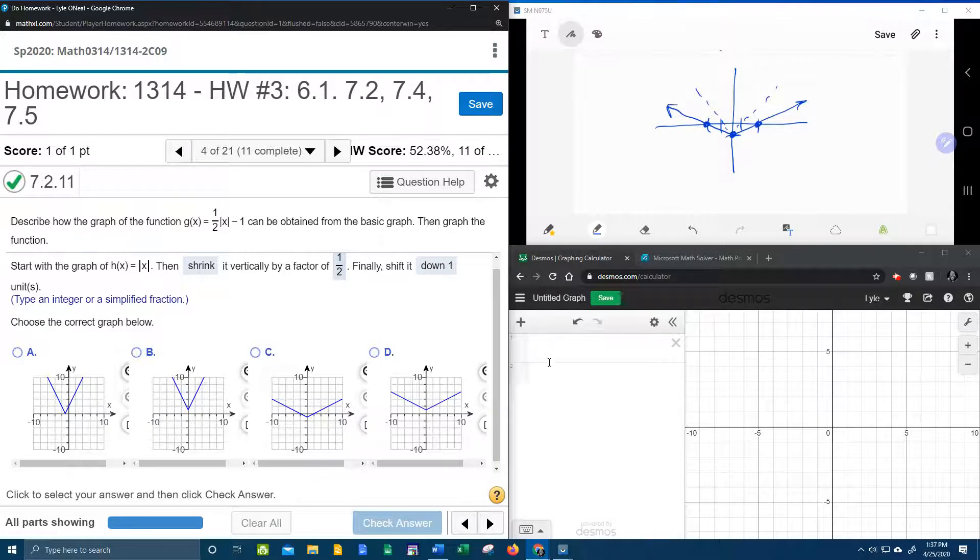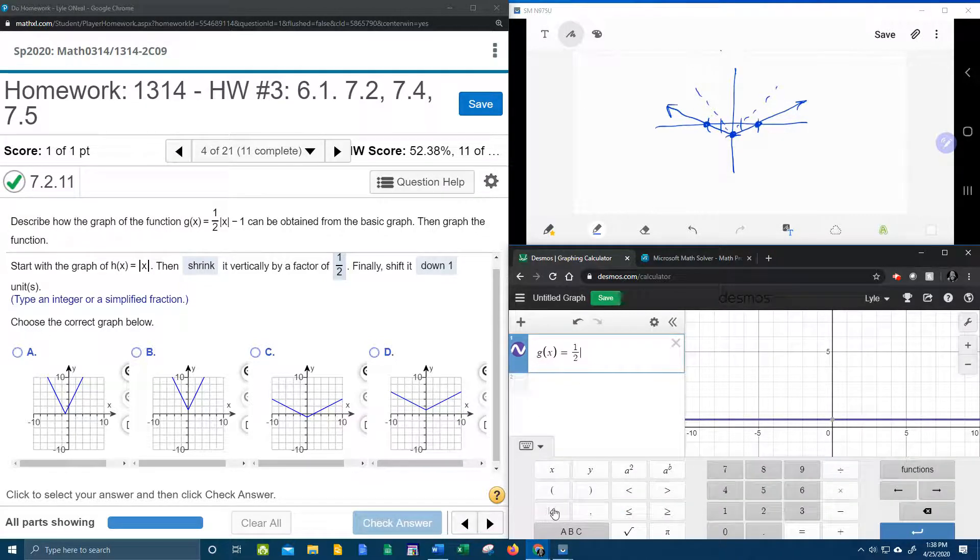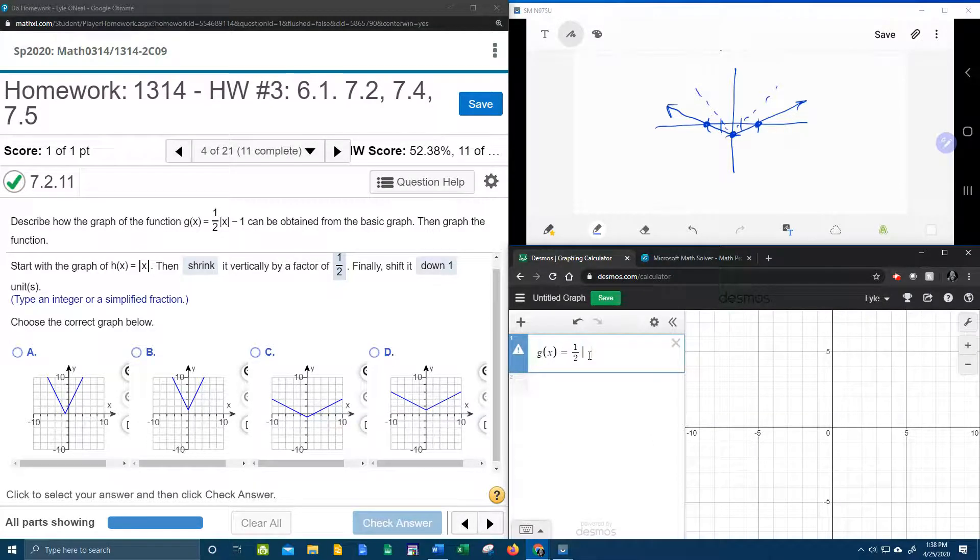Now let's check that with Desmos down here just to make sure. And the function was g(x) = 1/2. Now to do an absolute value, we're going to need to bring up the keyboard and select right here absolute value of x - 1.